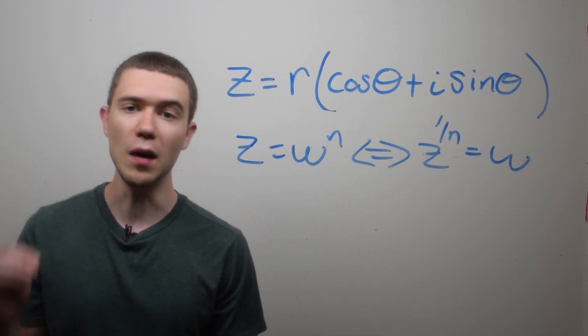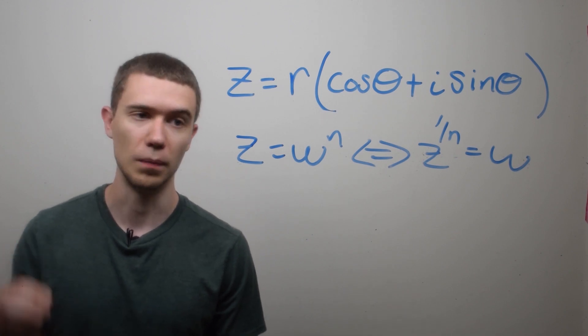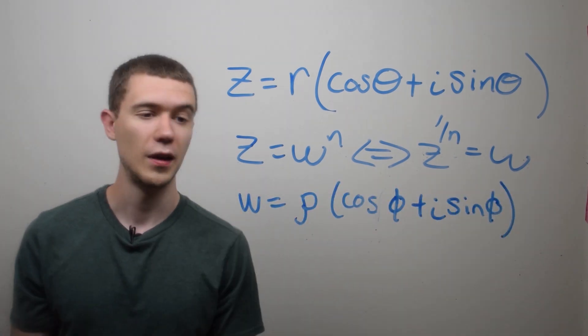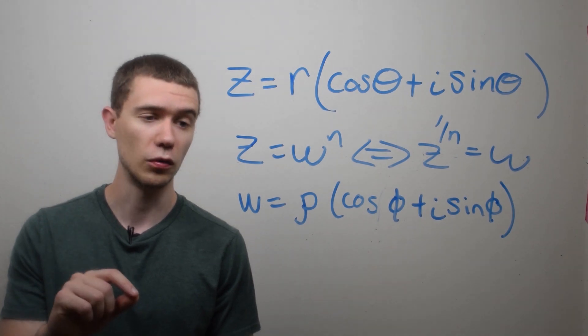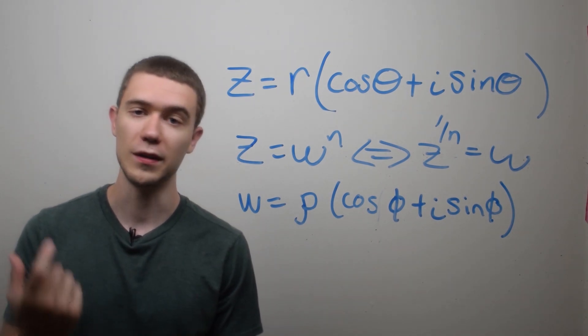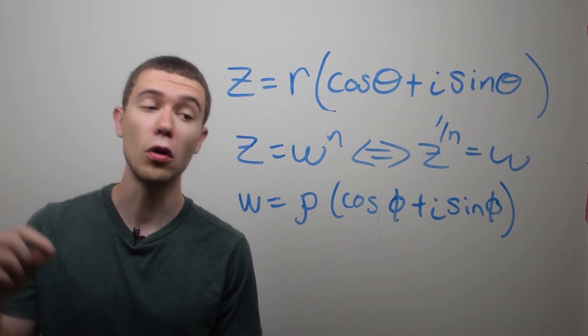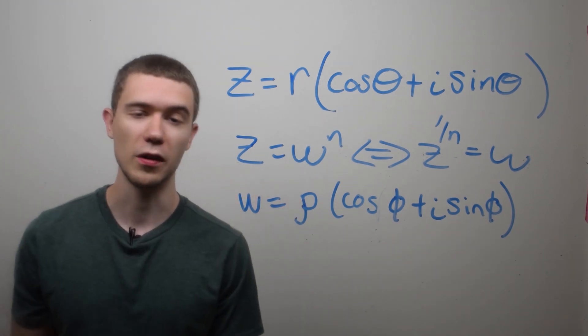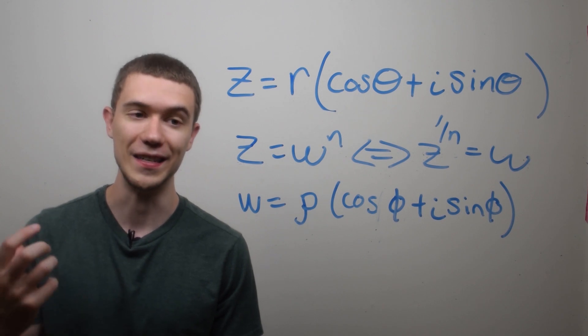So let's write w in its polar form. Here I've written w in its polar form, given by its radius, I've called that rho, and its own argument I've called phi. And now I've defined w so that if I raise it to the nth power, I get z.